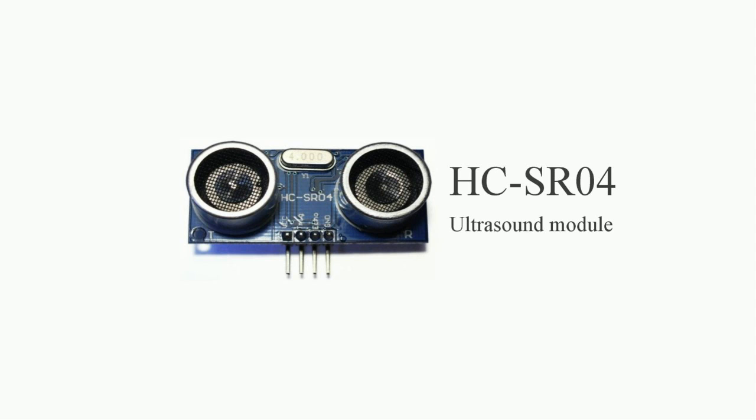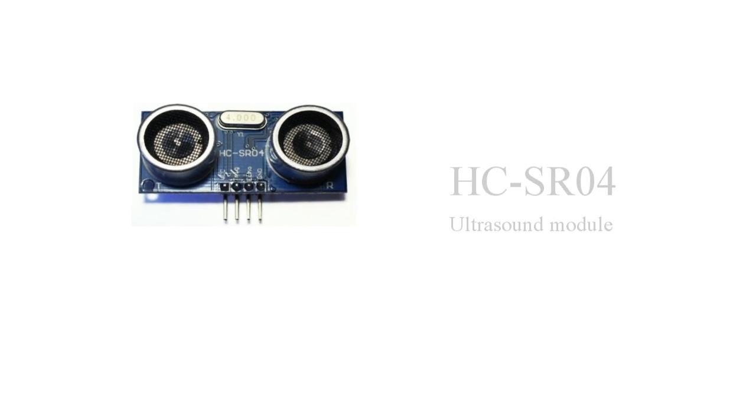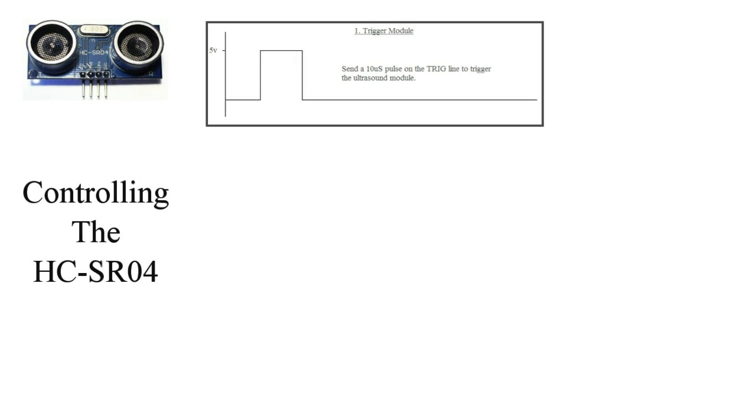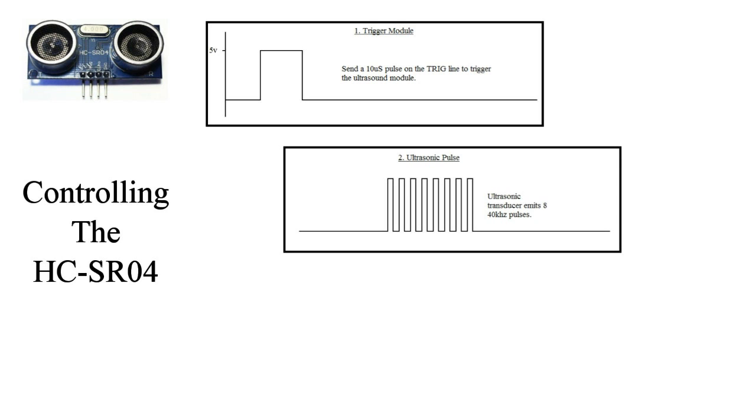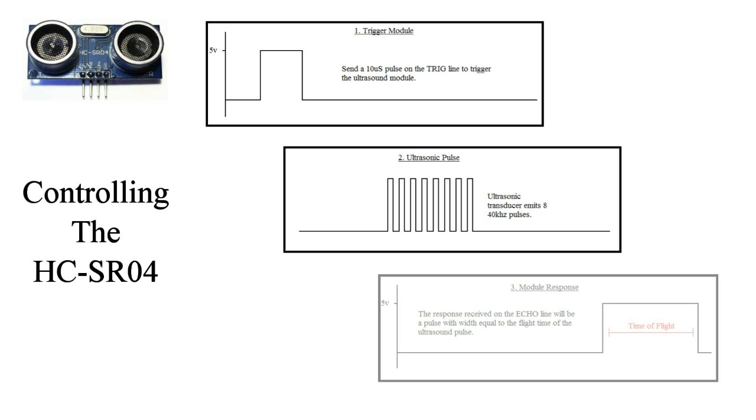My project uses four of these ultrasound modules to measure the distance to the user's hand. They're inexpensive and straightforward to interface with. To begin, we send a 10 microsecond pulse along the trig line of the module. This prompts the module to send out 8 40kHz pulses which are reflected by nearby objects. The final step occurs when the module detects an ultrasonic response. On the echo line, the module will output a pulse with width equal to the time of flight of the ultrasonic burst.